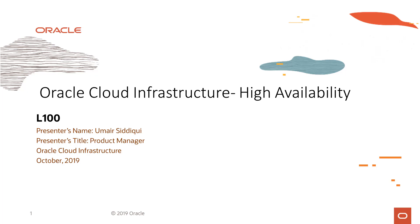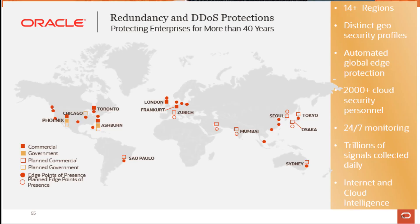Welcome to this lecture on High Availability and Oracle Cloud Infrastructure. Here we can see the overall deployments of Oracle Cloud Infrastructure in different regions. There are 14 plus regions that are live with the availability domains. There are government regions and there are edge points of presence.